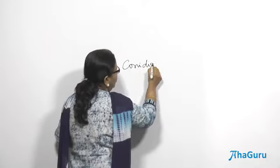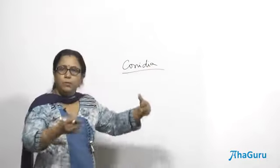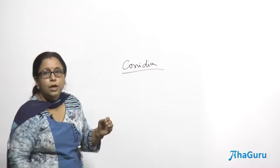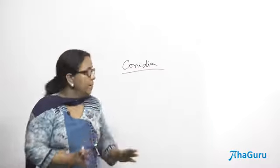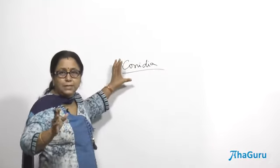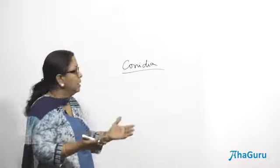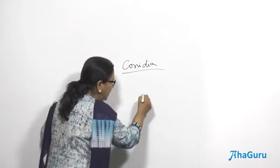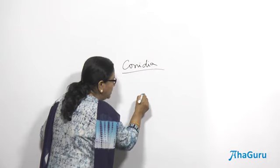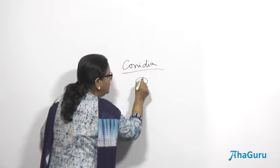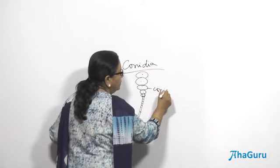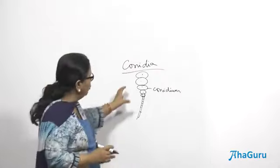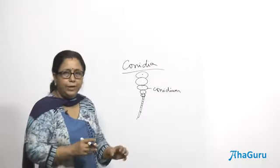Conidia are the asexual spores of ascomycetes. The difference between sporangiospores and conidia is that sporangiospores in zygomycetes are produced inside a sporangium, whereas conidia are not produced inside a sporangium — they are produced outside, exogenous in origin. The tip of the hypha bulges and keeps dividing, producing conidia. These get dispersed through wind and when they fall on suitable substratum, they divide and grow into hyphae.